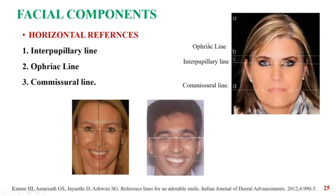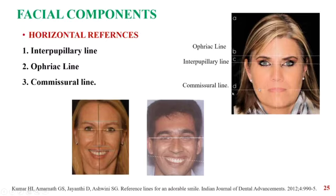The horizontal references are three: the interpupillary line, the commissar line, and the ophriac line. The interpupillary line runs from the center of the pupils of the eyes; the commissar line runs from the corners of the mouth; the ophriac line runs from the upper border of the eyebrows. The incisal level of the teeth and the gingival level should be parallel to the interpupillary line, which helps in analyzing any asymmetry. In one case the gingival levels are parallel to the interpupillary line, whereas in another case they are not, showing canting of the maxilla.